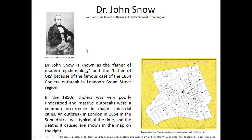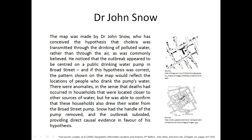Dr. John Snow — as we have heard about the 1854 cholera outbreak in London's Broad Street region — is known as the father of modern epidemiology and the father of GIS because of this famous case. In the 1850s, cholera was very poorly understood and massive outbreaks were a common occurrence in major industrial cities. An outbreak in London in 1854 in the Soho district was typical of the time, and the deaths caused are shown in the map on the right. That is why he is regarded as a father of GIS — he made a map showing where the deaths were taking place due to cholera.